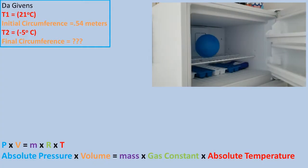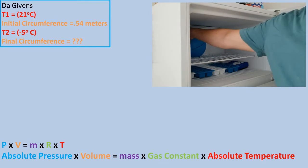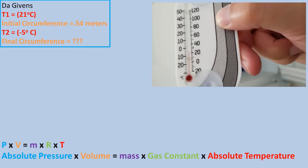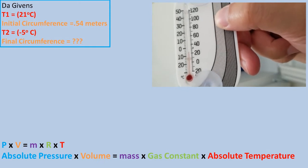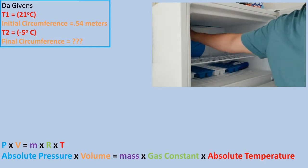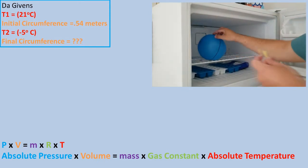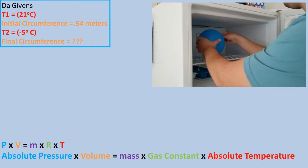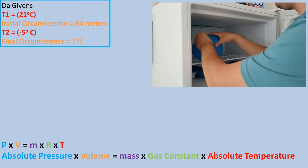To solve this problem, we'll be using the ideal gas law, which is absolute pressure times volume equals mass times the gas constant times absolute temperature, or in other words, PV equals mRT. Note there is another variant that uses moles of gas, however in engineering, we are more commonly interested in mass.